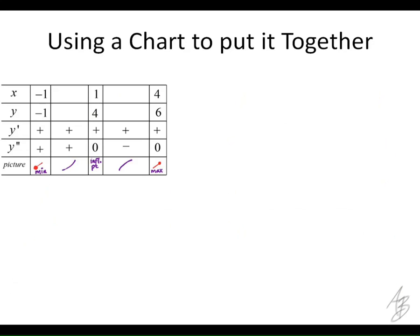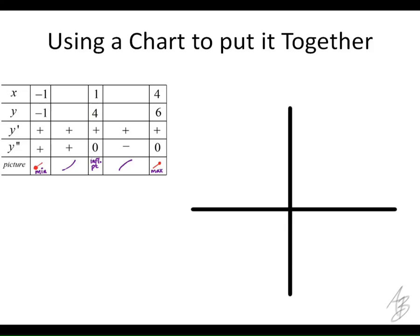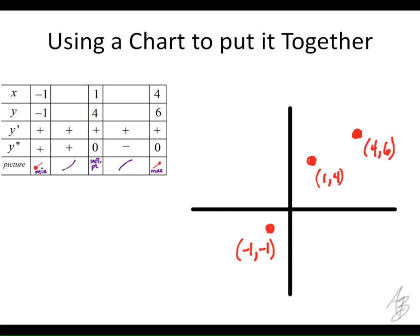We take this information from the chart and draw the function. We know the points (−1, −1), (1, 4), and (4, 6) are on the graph. Between negative one and one the function is increasing and concave up; from one to four it's increasing and concave down. We draw a smooth curve where the concavity changes at (1, 4), making that point an inflection point.